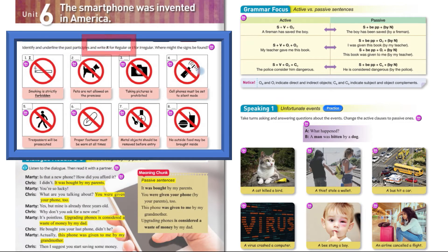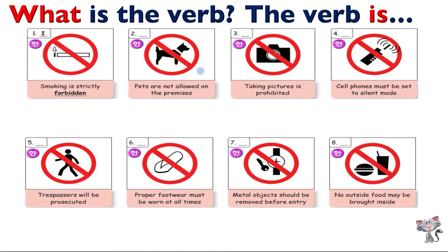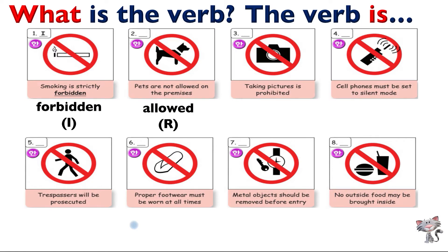So starter signs. It says: identify and underline the past participle and write regular or irregular for the verb. The first one I'll do for you. 'Smoking is strictly forbidden.' This is irregular. I means irregular. So Yonghee, the next one: 'Pets are not allowed on the premises.' Allowed is regular because it has ED at the end of the verb.